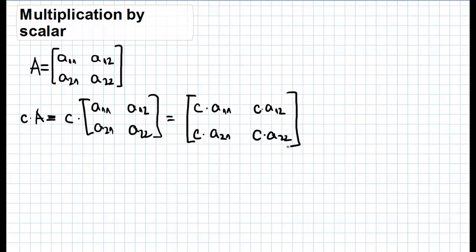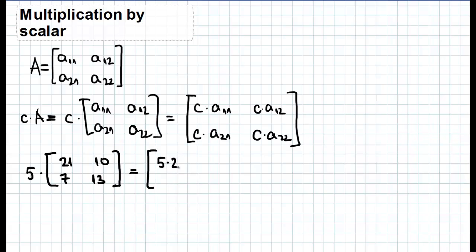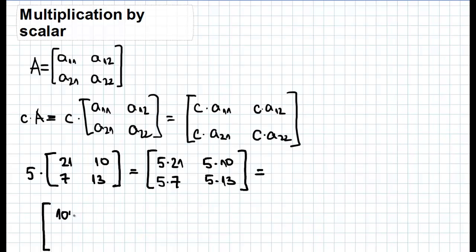And that's all you have to do. Now let's try to do this with some numbers. For example, 5 times a matrix consisting of elements 21, 10, 7, and 13. We need to multiply each element by 5, which gives us 5 times 21, 5 times 10, 5 times 7, and 5 times 13. When we calculate all this we get the following matrix: 5 times 21 is 105, 5 times 10 is 50, 5 times 7 is 35, and 5 times 13 is 65. And that's all — from this you can see how simple this operation is.